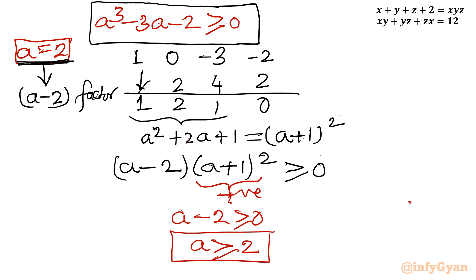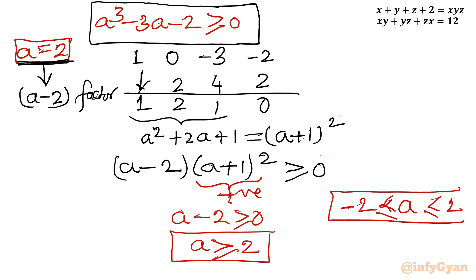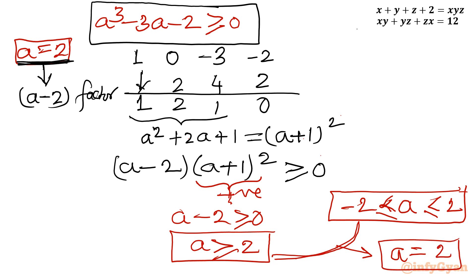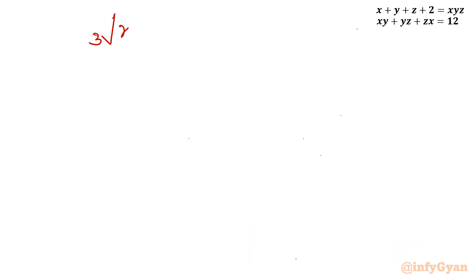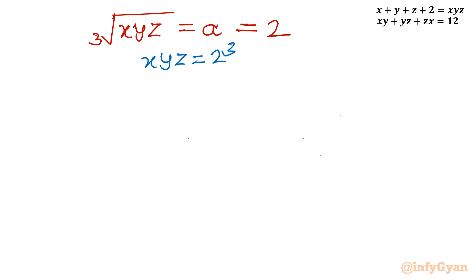Now combining both results: from conclusion 1, a must lie in [-2, 2], and from the second inequality, a ≥ 2. The only value satisfying both is a = 2. Since a = ∛(xyz) = 2, cubing both sides gives xyz = 2³ = 8.